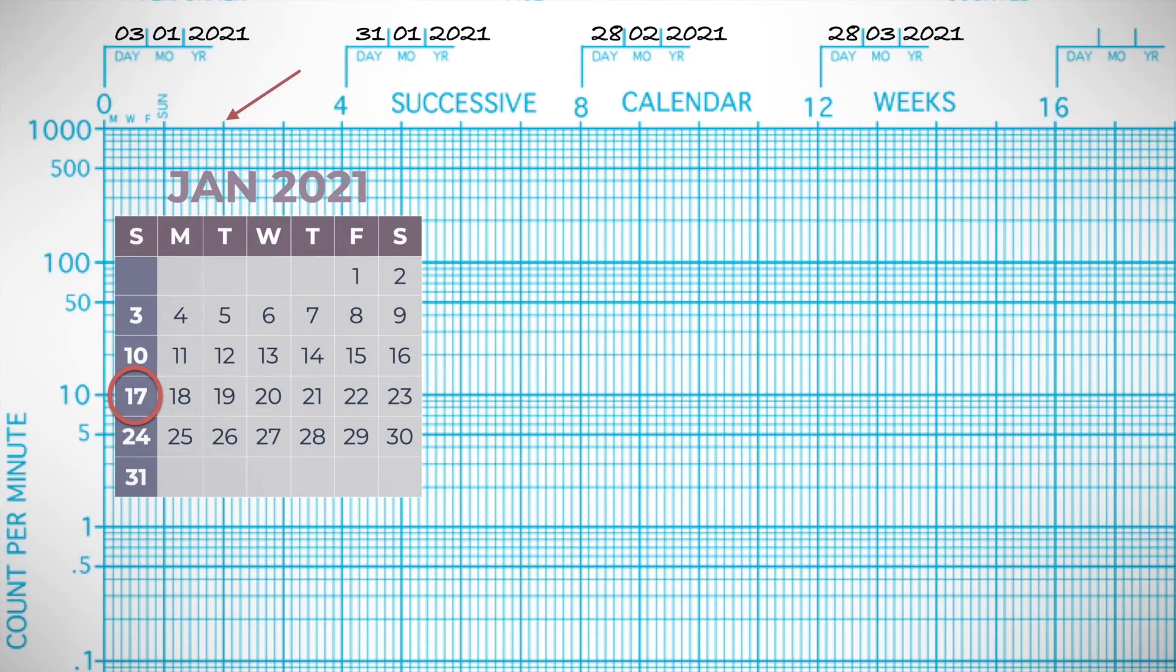You could label these if you want, or you can just follow along with a calendar. This would be the 24th, so all the days in between are accounted for, and then we have another labeled Sunday on the 31st.